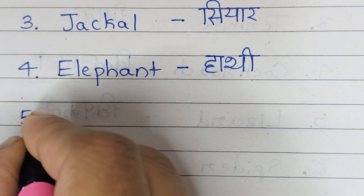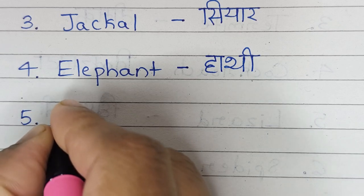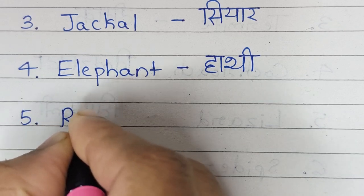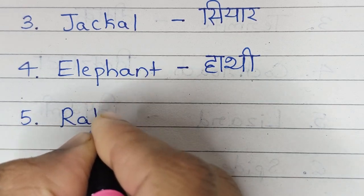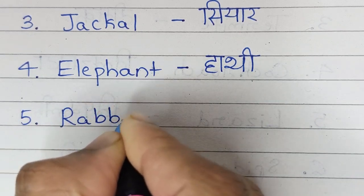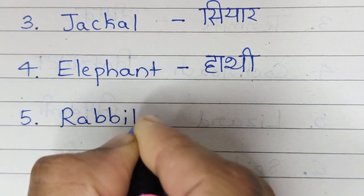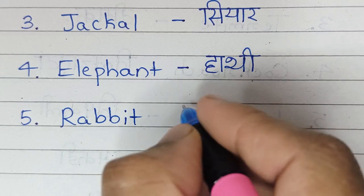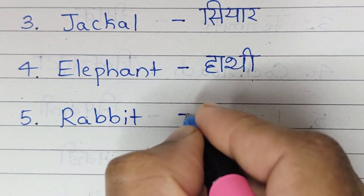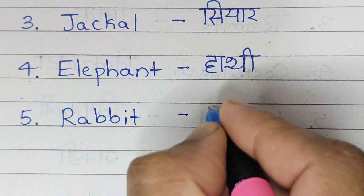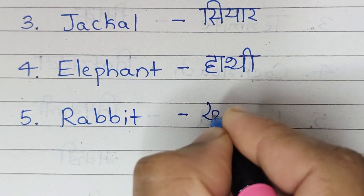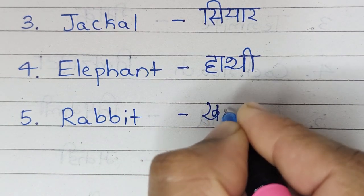Number 5. R-A-B-B-I-T, Rabbit. Rabbit matlab? Kergosh.